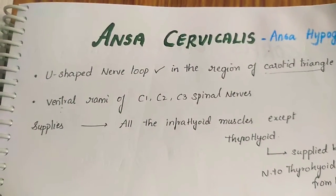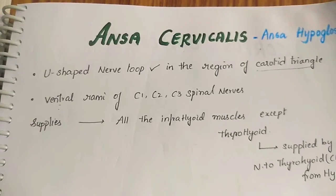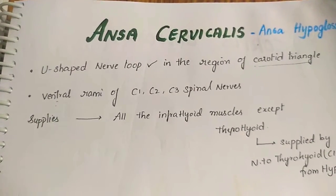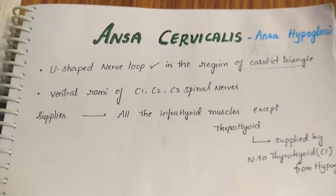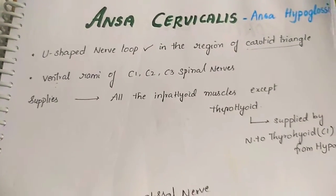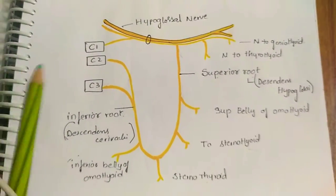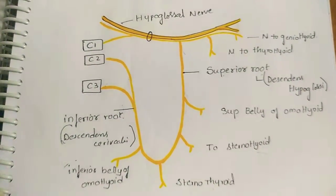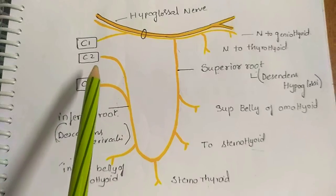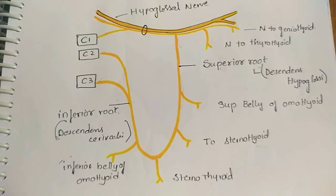Ansa cervicalis is a U-shaped nerve loop that is present in the region of the carotid triangle, below the carotid sheath. It arises from the ventral rami of C1, C2, and C3 spinal nerves.